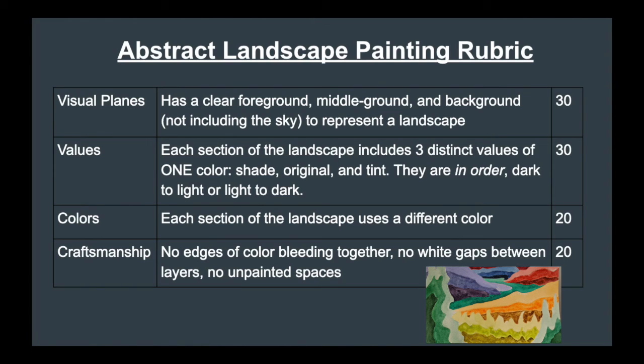The values, each section of your landscape, need three distinct values of one color. So say your foreground is orange. You're going to need a shade of orange, the original orange, and a tint of orange. You're going to keep them in order, either going light to dark or dark to light.